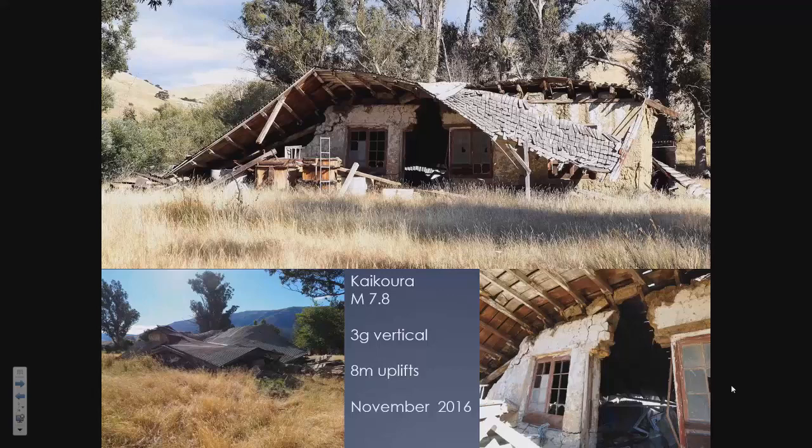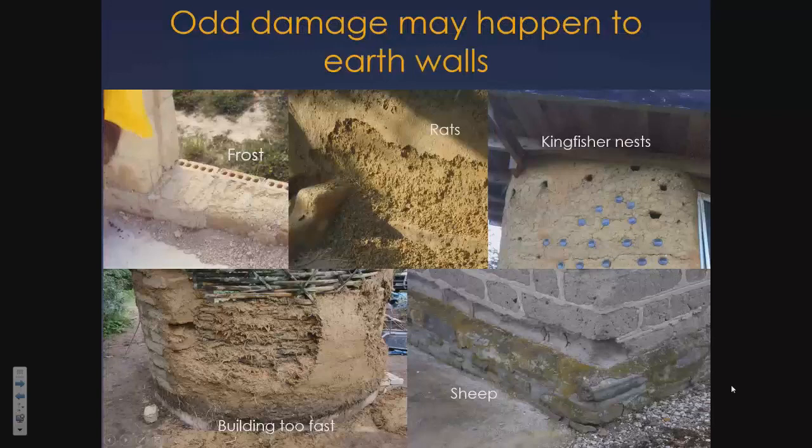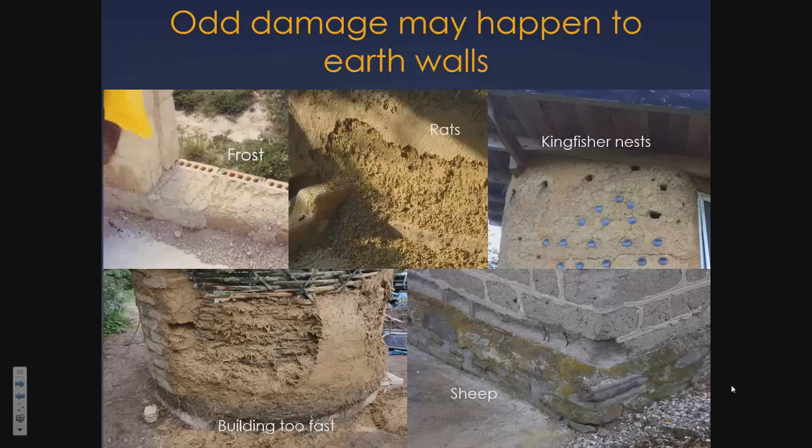The 7.8 earthquake ruptured something like 21 or 24 faults at the epicentre, triggering off a whole sequence of earthquakes. There were 8-metre uplifts in land and some buildings didn't do too well. This old historic building — actually uninhabited fortunately at the time — had an enormous serenity. It was a mud brick building that blew apart, but it was actually a very lovely ruin. Architects take aesthetic delight where they can sometimes.